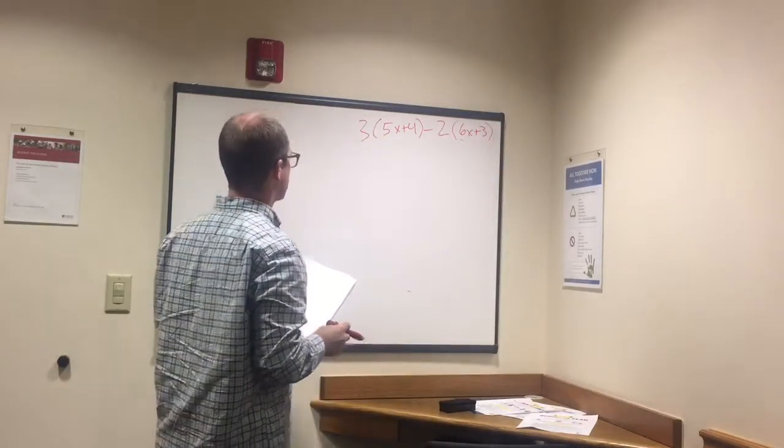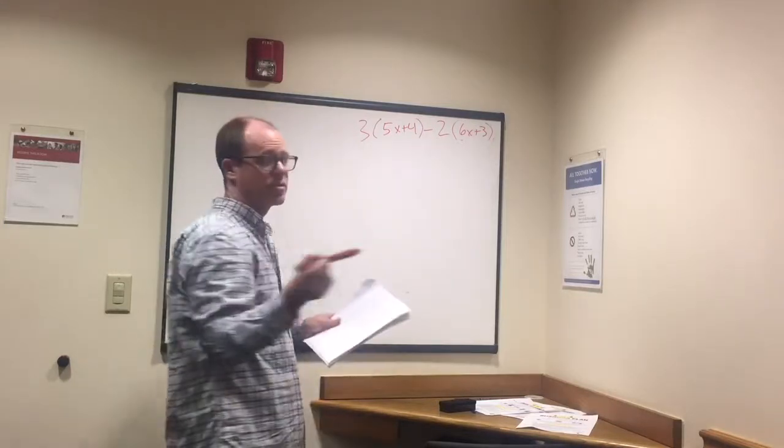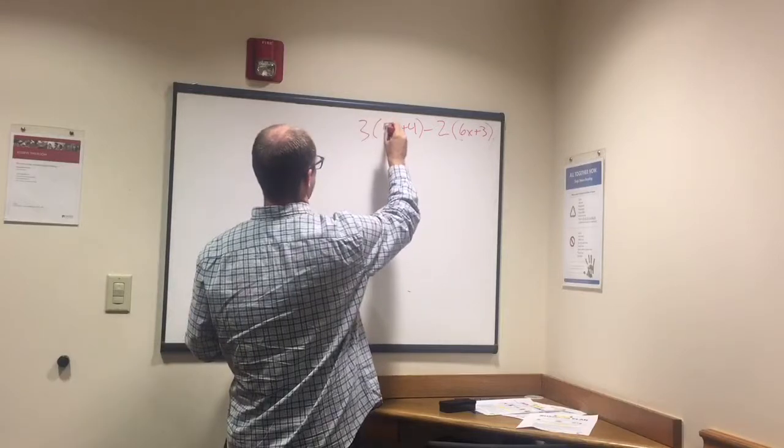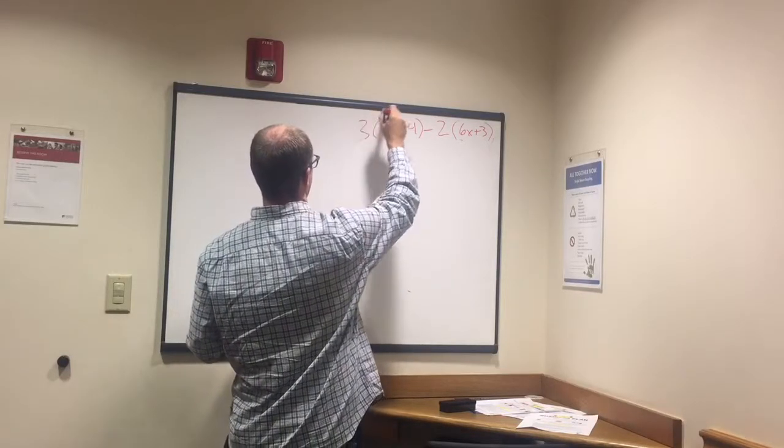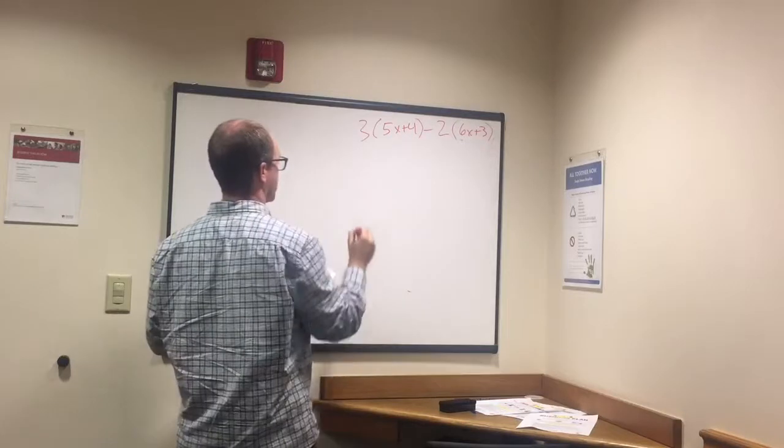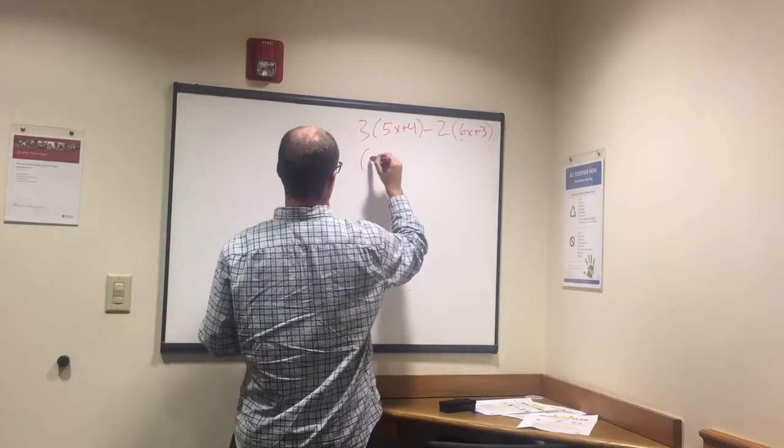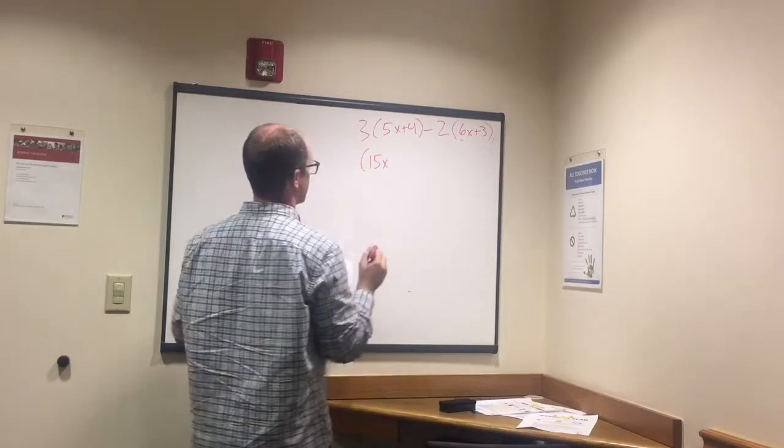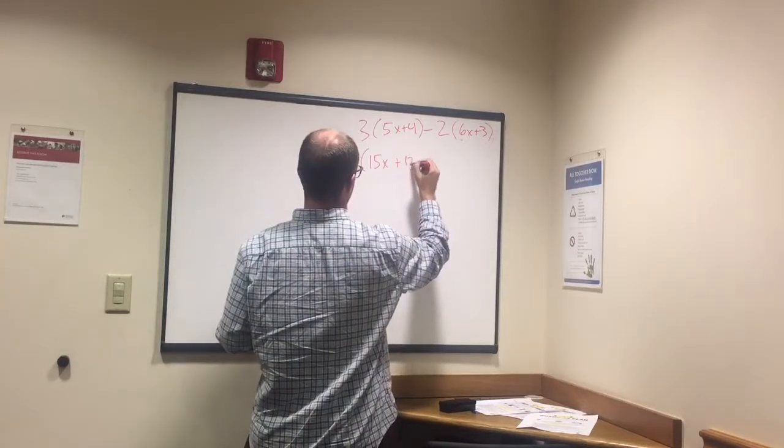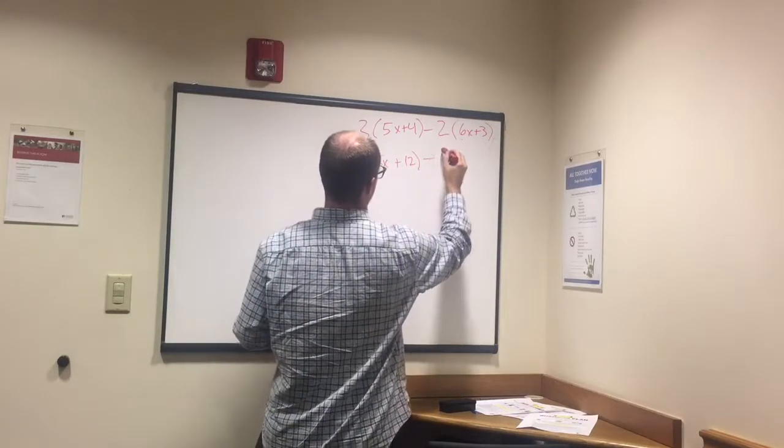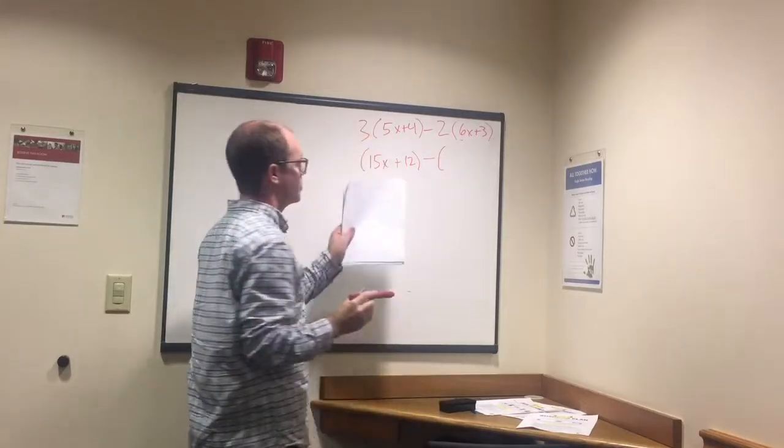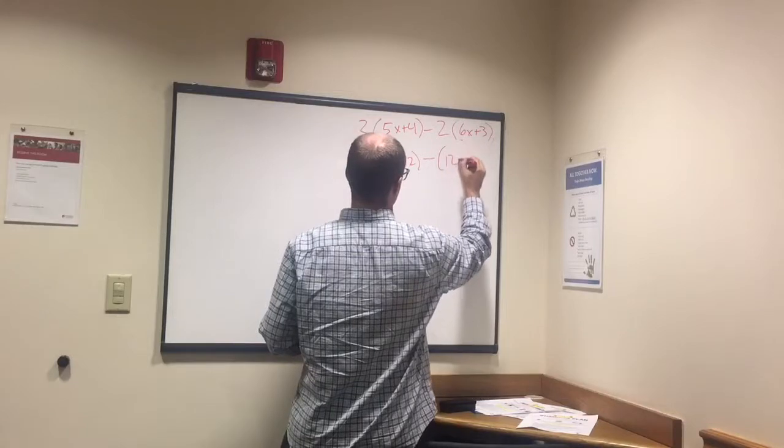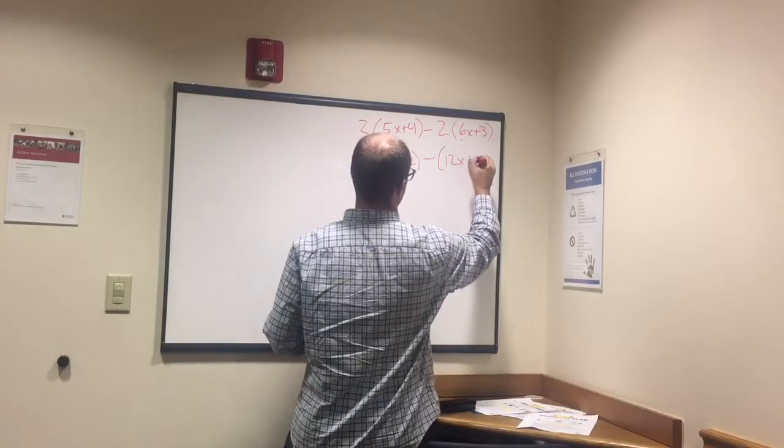Okay, so what we're going to do is use distributive property then subtract. So that means I'm going to multiply 3 times the 5x plus 3 times the 4, and the same over here. So 3 times 5x is 15x, 3 times 4 is 12, so plus 12 minus. Now we have 2 times 6x, so 12x, and 2 times 3 is 6.